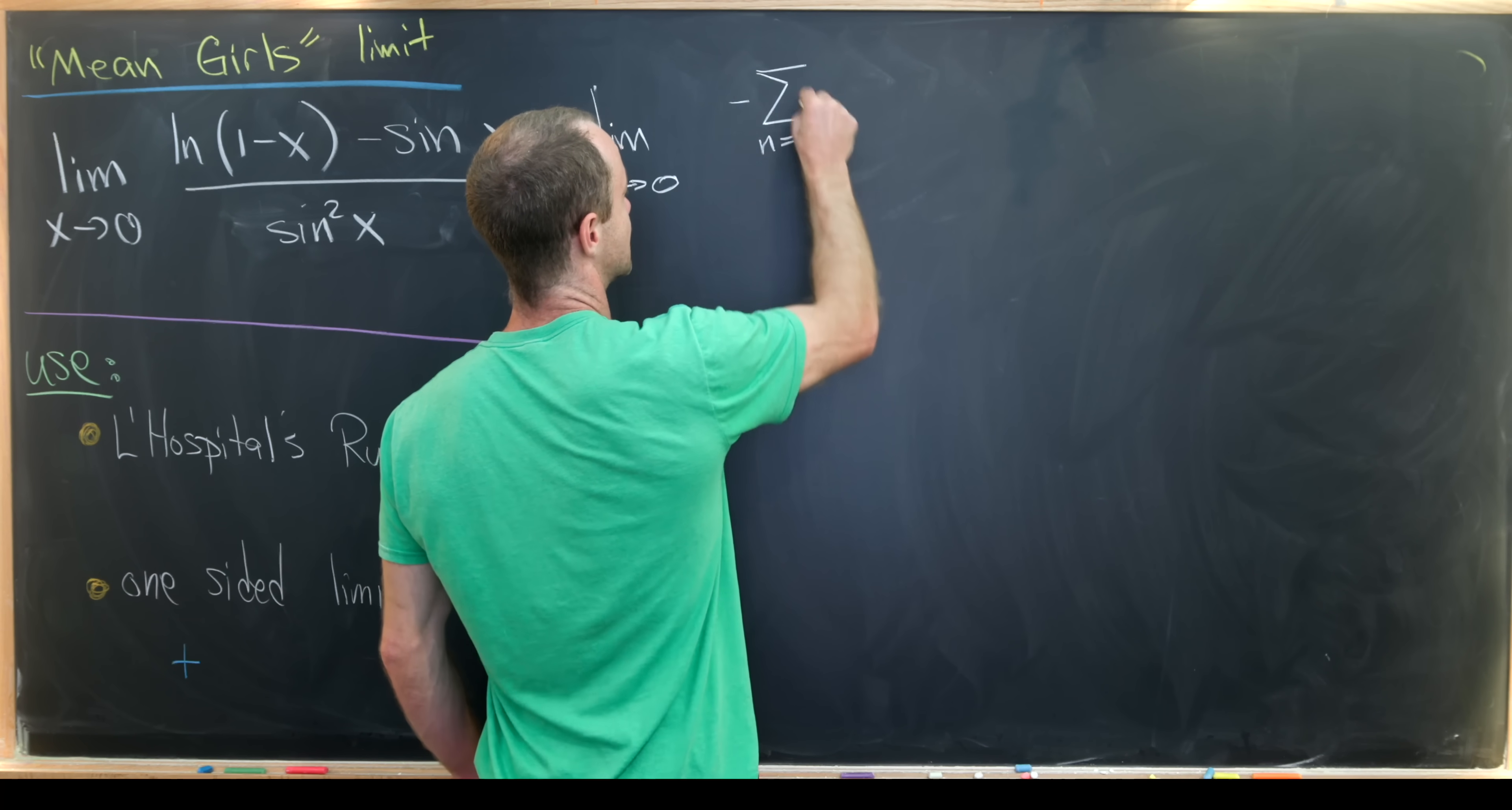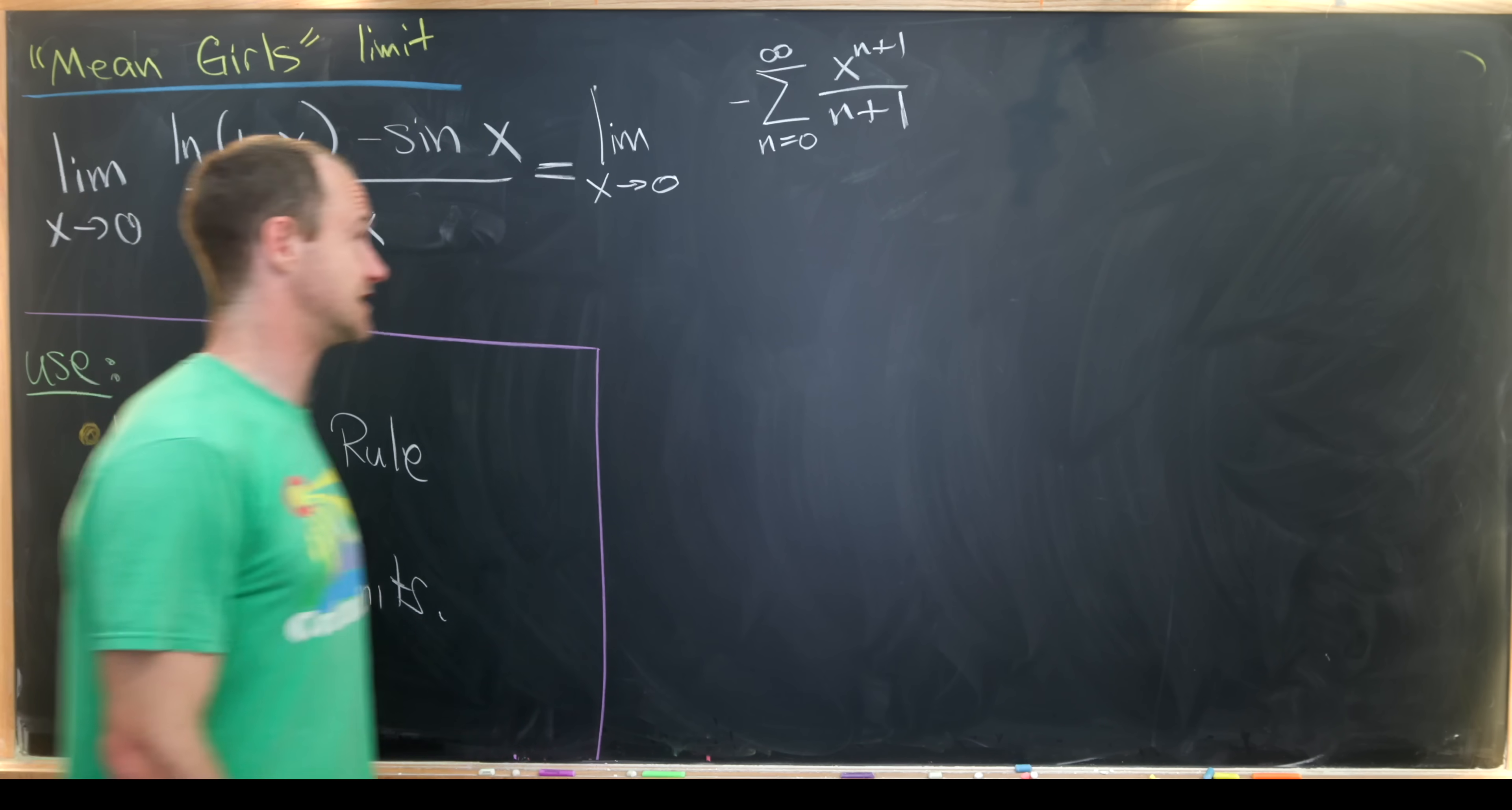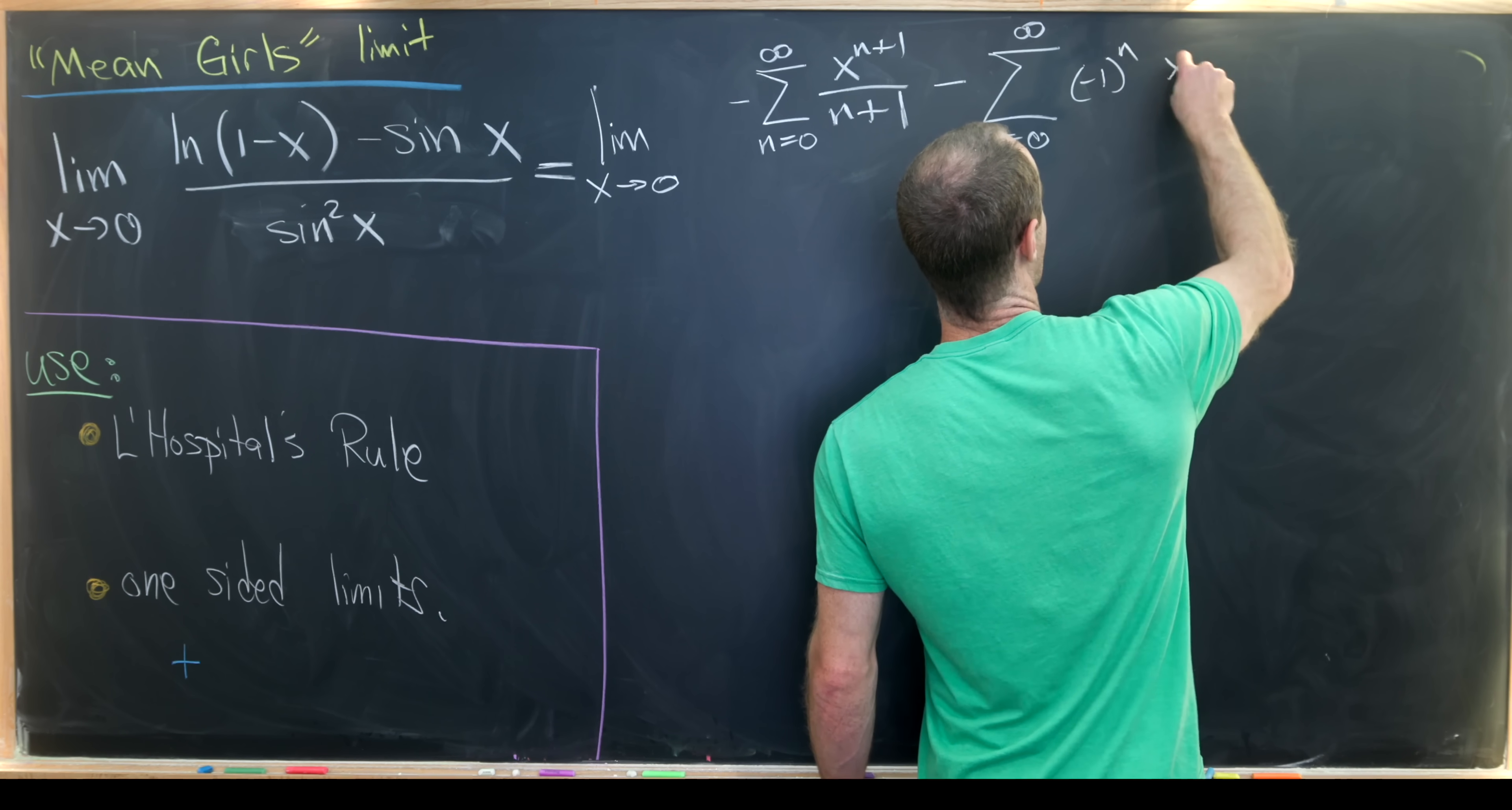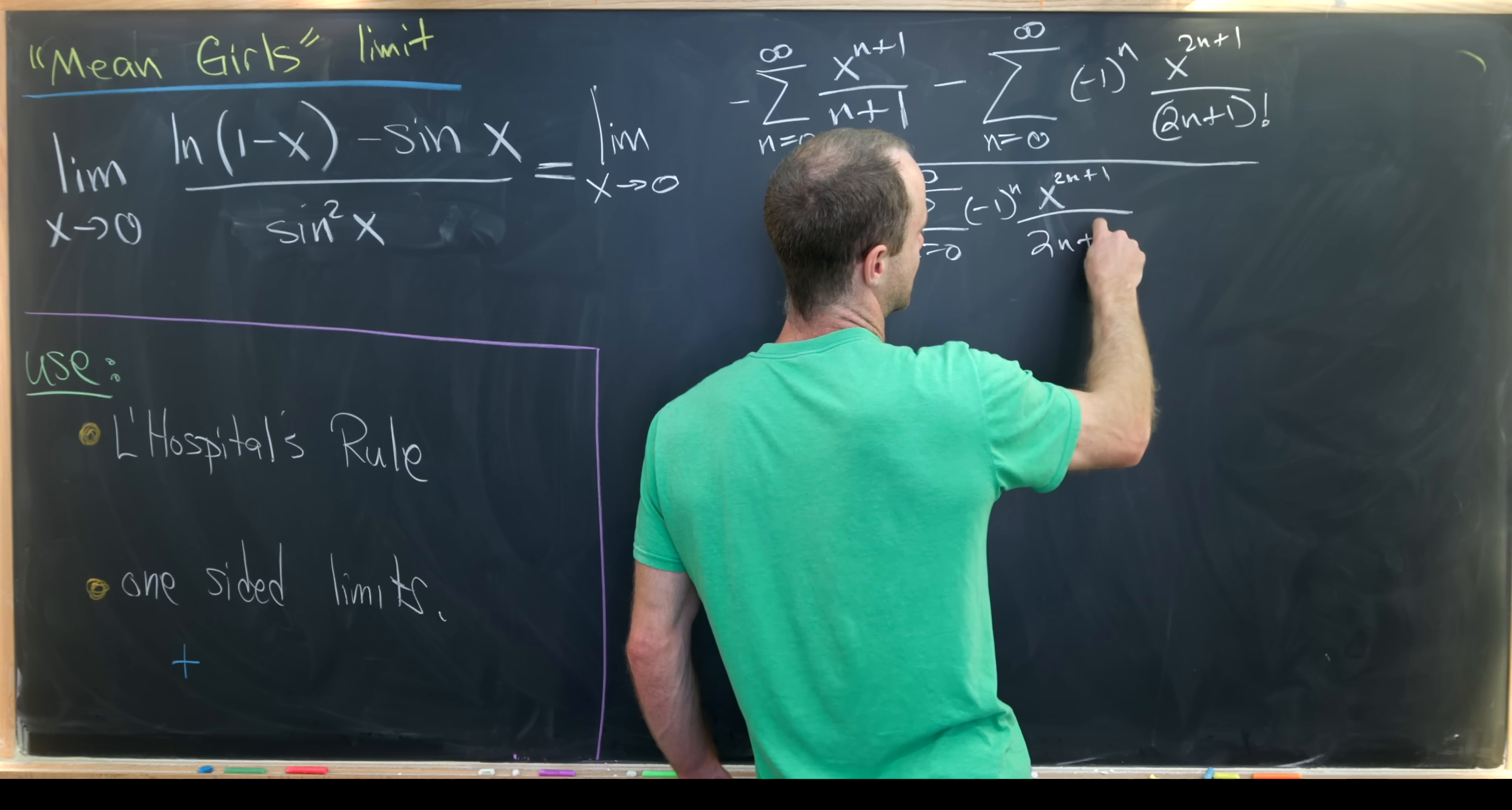This will give us the limit as x goes to 0 of minus the sum as n goes from 0 to infinity of x to the n plus 1 over n plus 1. That's the Taylor series for the natural log function, given that the Taylor series for 1 over 1 minus x is a geometric series, and then we take the antiderivative. And then from that, we subtract the sum as n goes from 0 to infinity of minus 1 to the n, x to the 2n plus 1 over 2n plus 1 factorial. In the denominator, we have the sum as n goes from 0 to infinity of minus 1 to the n, x to the 2n plus 1 over 2n plus 1 factorial.